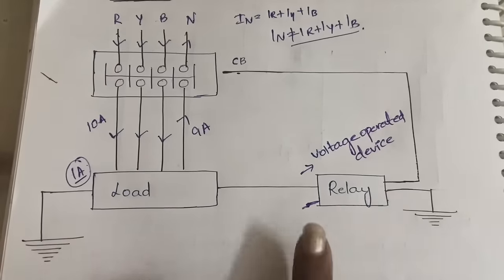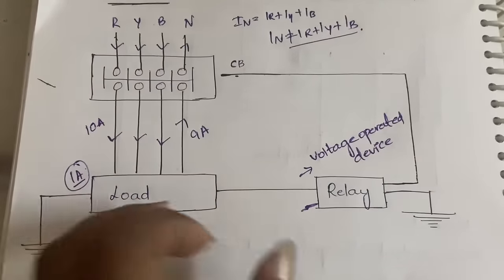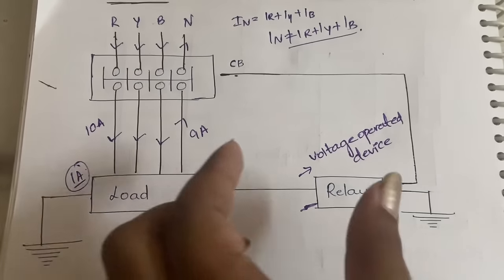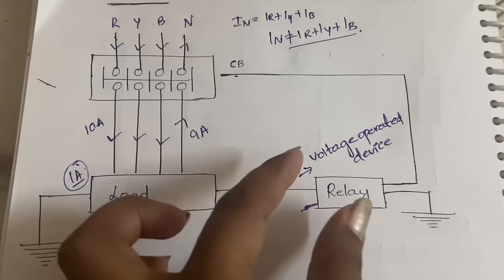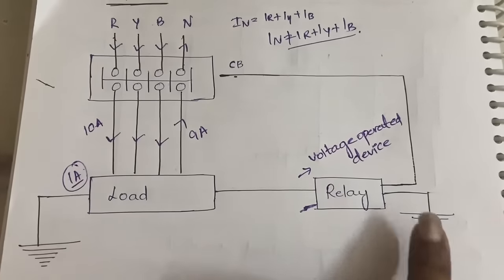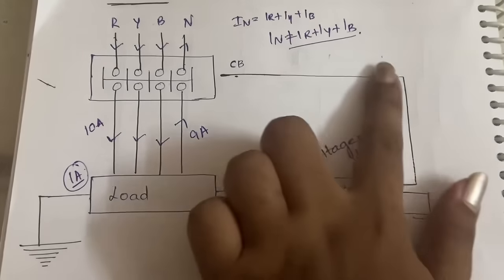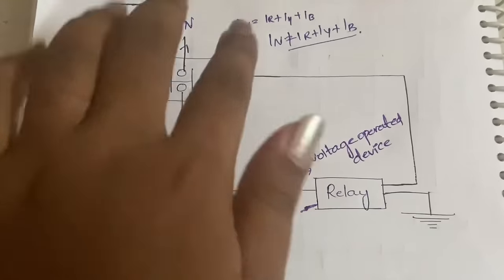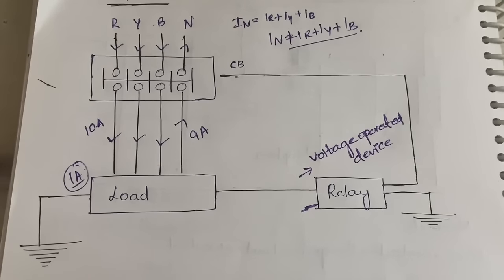Observe that the relay is connected to three things: to the load, to the ground, and to the circuit breaker. Whatever current is leaked at the load is sent to the relay, which then sends it to the ground. At the same time, the relay sends a signal to the circuit breaker saying some current is being leaked, and the circuit breaker will trip the main supply and switch it off.